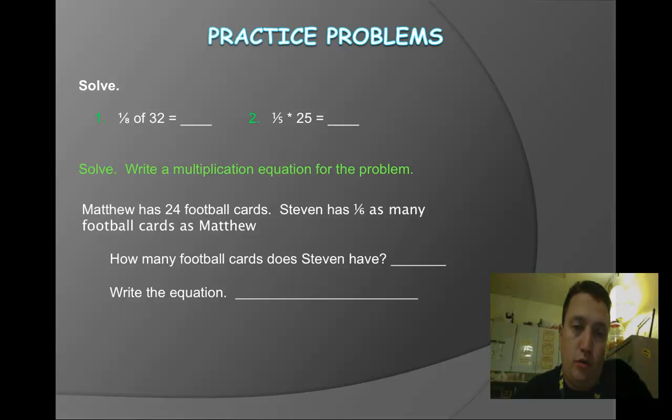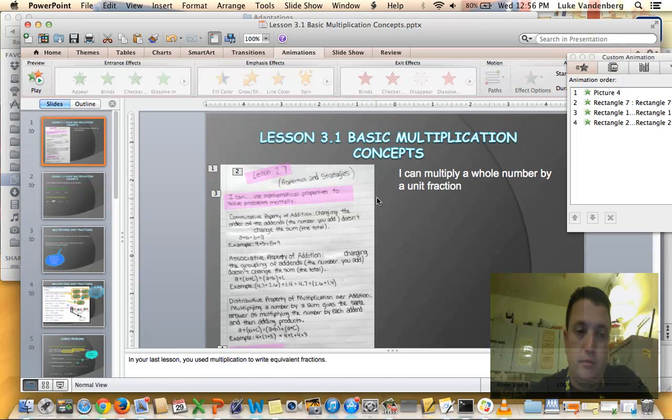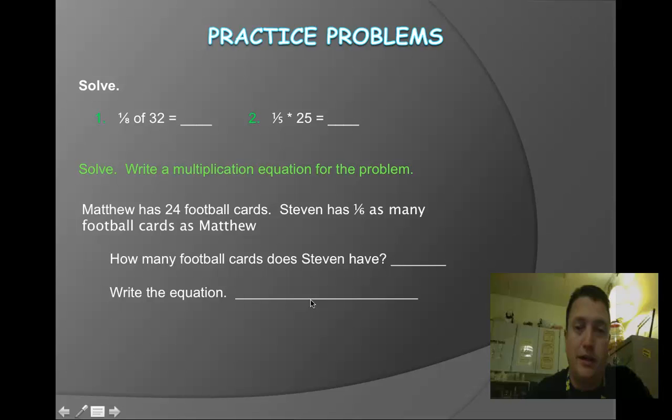So here are your practice problems. It says to solve, so practice problem number 1, 1 eighth of 32 equals and practice problem number 2, 1 fifth of 25 or times 25. Those mean the same thing. 1 eighth of 32 is the same as saying 1 eighth times 32. Down here you have to solve and you have to write the multiplication equation for the problem. This is Matthew has 24 football cards. Stephen has 1 sixth as many football cards as Matthew. This is where I don't need you to copy down this whole problem. You can write down problem number 3. And then I want you to just put down how many football cards does Stephen have, write that down and then put the answer. And then I want you to write the equation for that. I don't need you to write the words, write the equation. Just show me the equation in your math notebook.